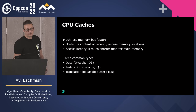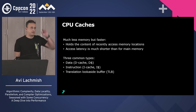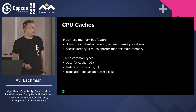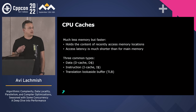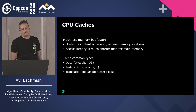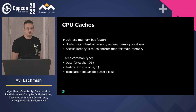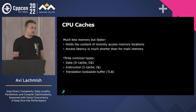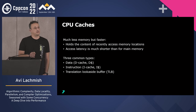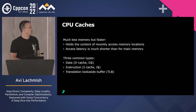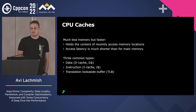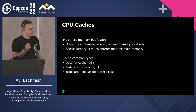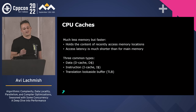To understand why, we need to understand caches. Caches are small but very fast memories that usually hold the last-accessed data. We have three types: the data cache which holds data, the instruction cache which holds instructions, and the TLB which translates virtual to physical memory addresses. We won't discuss the TLB further because when you handle data and instruction caches correctly, you usually achieve the same result on the TLB.